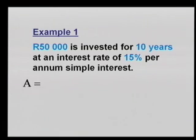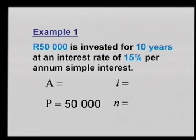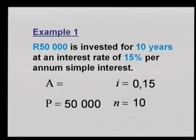Let's have a look. A is equal to, P is equal to, I is equal to, and N is equal to. We know 50,000 as P. We know 10 years as the number of years, and we know 15 as the interest rate, which we convert to a decimal.